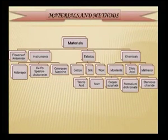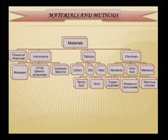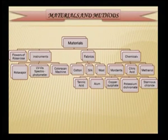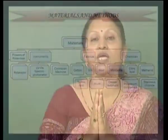To look at how rose material can be used for dyeing, flowers of rose — botanical name Rosa rosa — are taken and extracted. The instruments used for measurements were UV-Vis spectrophotometer and color scan machine. Three types of fabric were used: cotton, silk and wool. The chemicals used were mordants — alum, copper sulfate, potassium dichromate and stannous chloride — and citric acid and methanol. Cotton was treated with tannic acid, while silk and wool were only treated with the mordants.